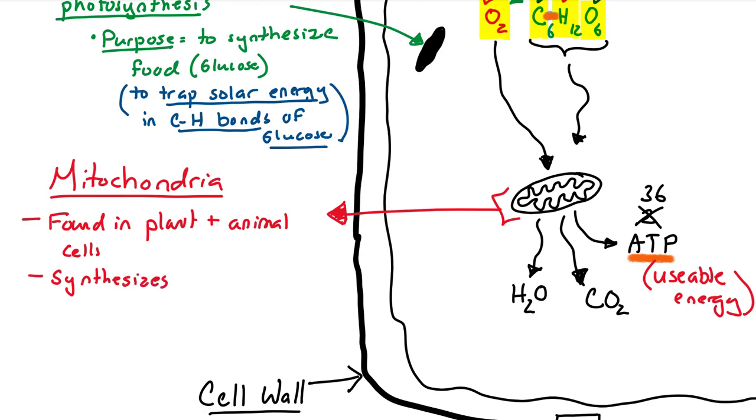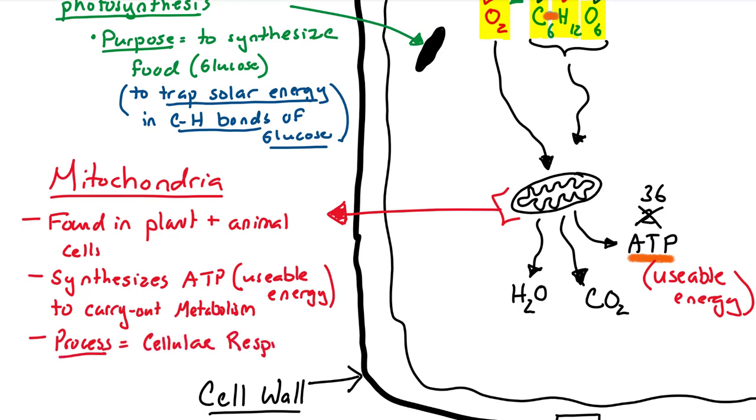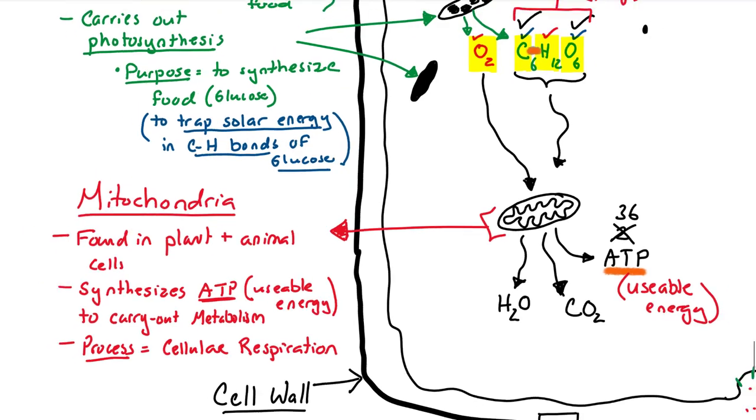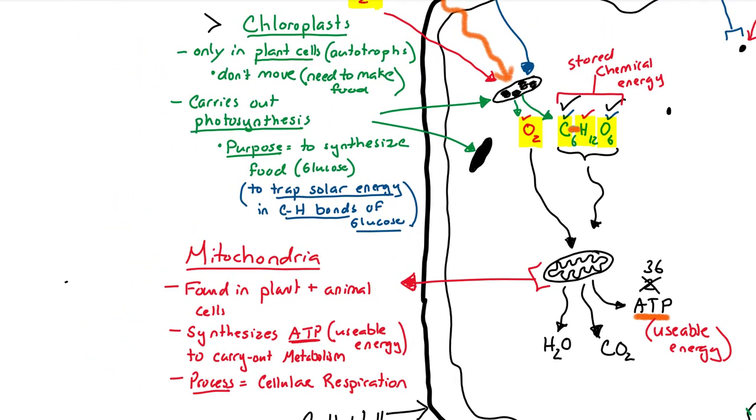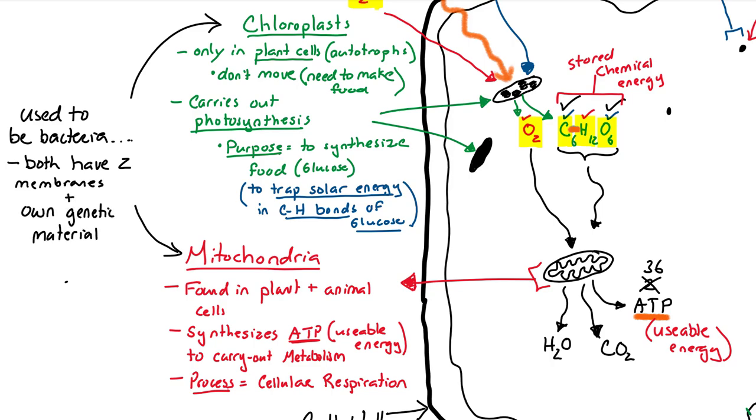Found in plant and animal cells, it synthesizes ATP as we said 500 times. And ATP is going to be used to carry out all life functions. This process of taking energy out of glucose and making ATP is known as cellular respiration. These two organelles, as mentioned earlier, they used to be bacteria. And what led people to think this is the fact that they have two membranes and they also have some of their own genetic material.